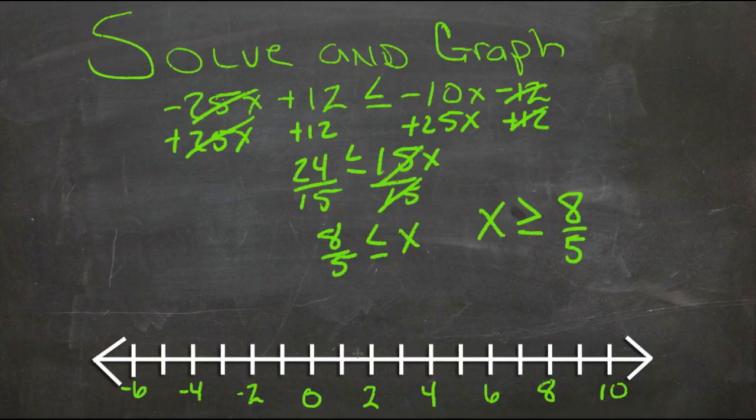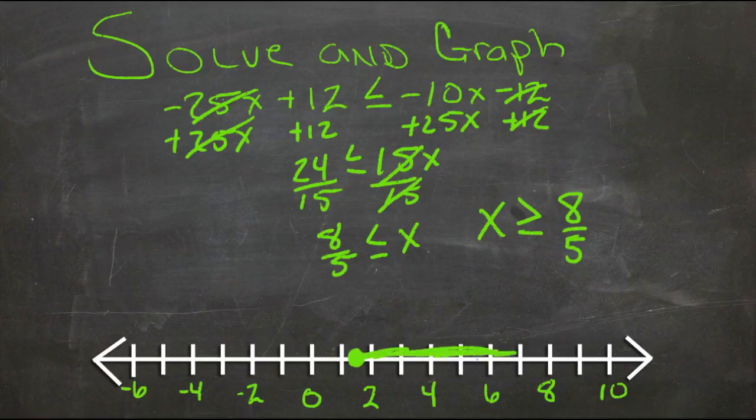Something about a little less than 1 and a half, so a little less, right about there. And since it's greater than or equal to, we fill in the circle and then shade to the right, the greater than side.